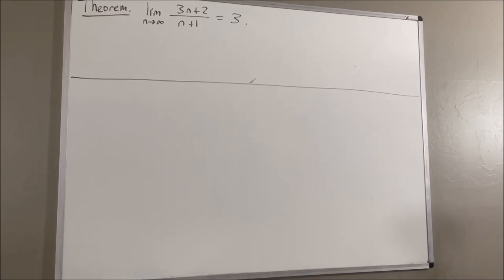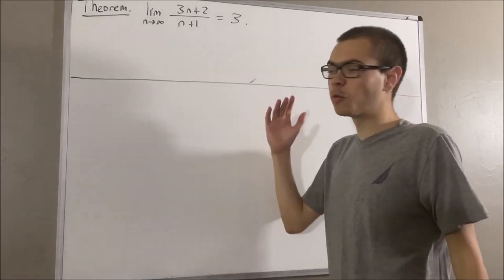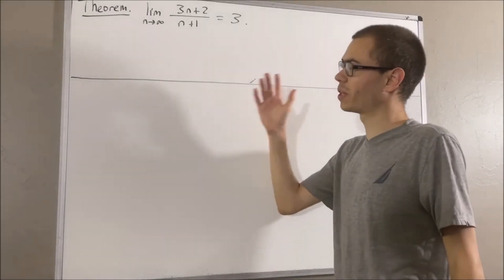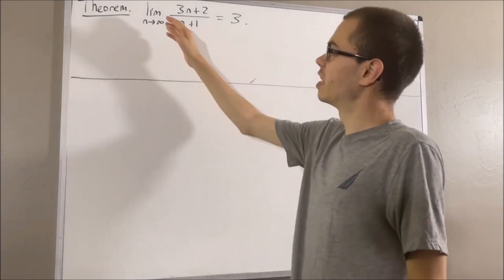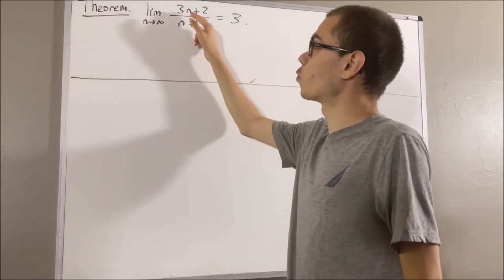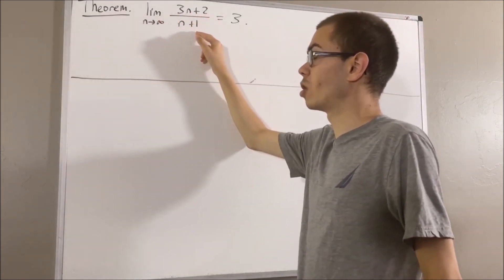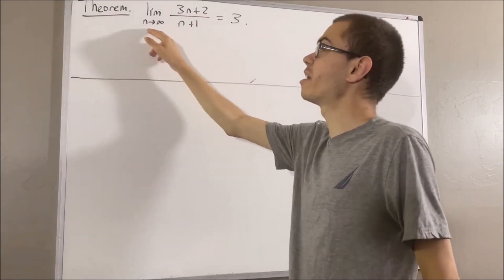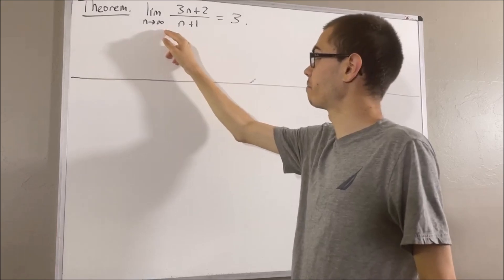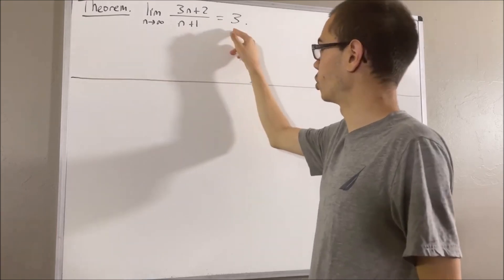Hello! In this video, we are going to prove the following theorem: the limit of 3n plus 2 over n plus 1, as n approaches infinity, is equal to 3.